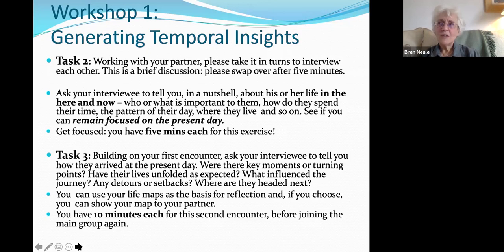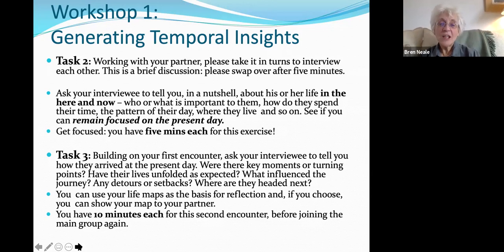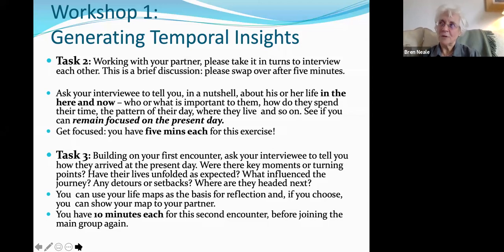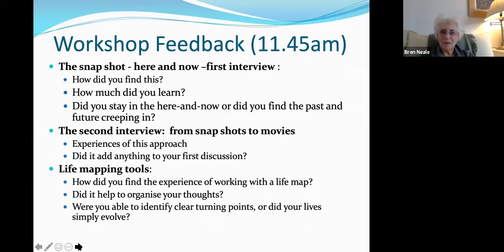In task three, ask: were there key moments or turning points along the way? Have their lives unfolded as expected? Were there particular influences on the journey, aha moments when they decided to go a different route, detours or setbacks? Where are they headed now? You can use your life map as the basis for reflection and, if you choose, share your map with your partner. You have a luxury here of 10 minutes each for this second encounter. After that we'll bring everyone back to the main group for a general discussion about what you found.